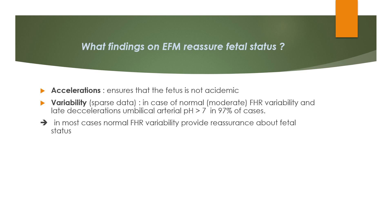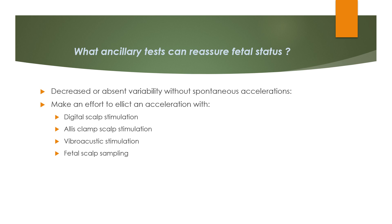Findings on EFM that reassure fetal status: accelerations ensure that the fetus is not acidemic. In the case of normal moderate FHR variability even with late decelerations, the umbilical arterial pH is more than 7 in 97% of cases. Normal fetal heart rate variability provides reassurance about fetal status in most cases. When there is decreased or absent variability without spontaneous accelerations, make an effort to elicit an acceleration with digital scalp stimulation, Allis clamp scalp stimulation, vibroacoustic stimulation, or fetal scalp sampling.